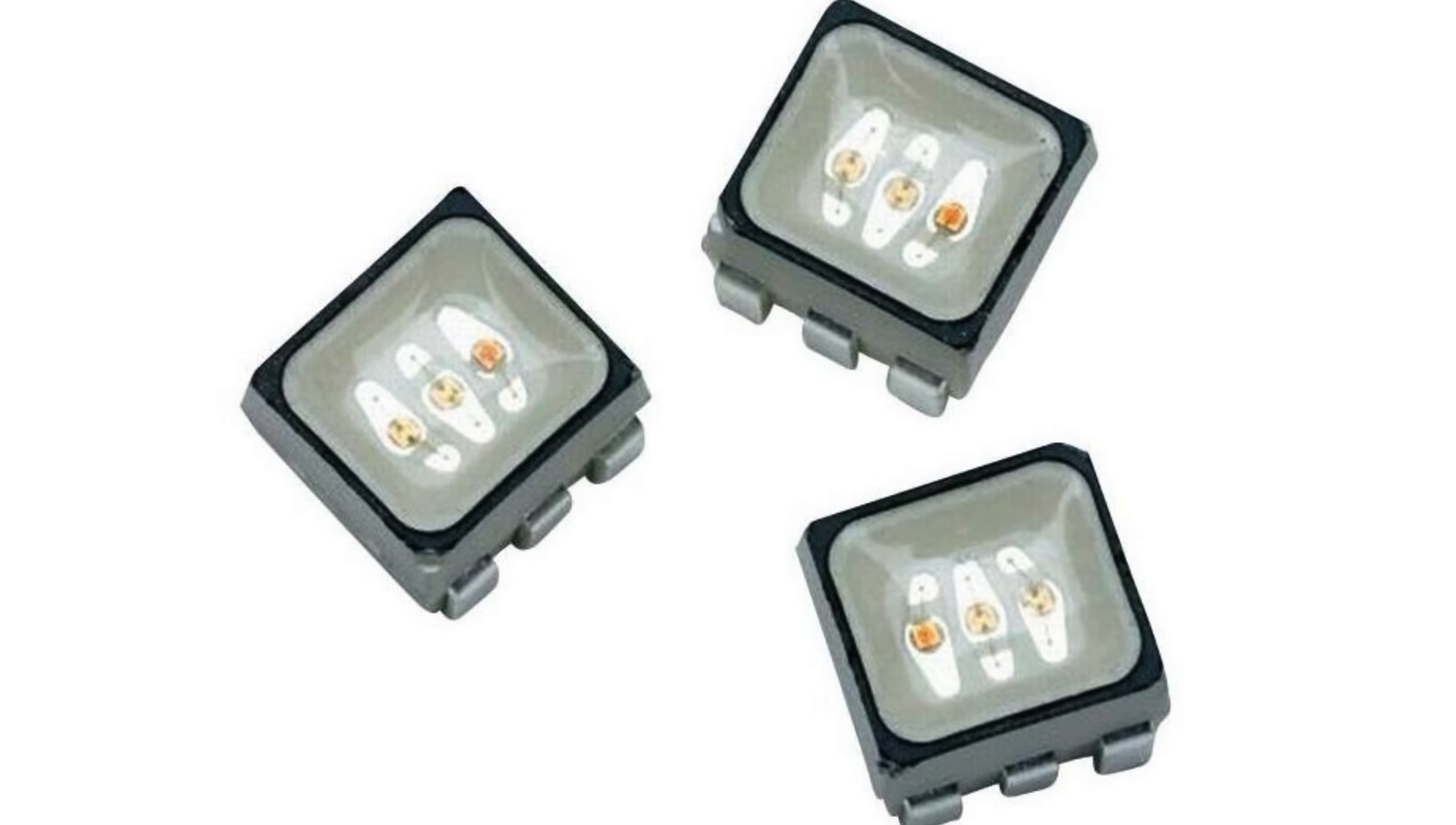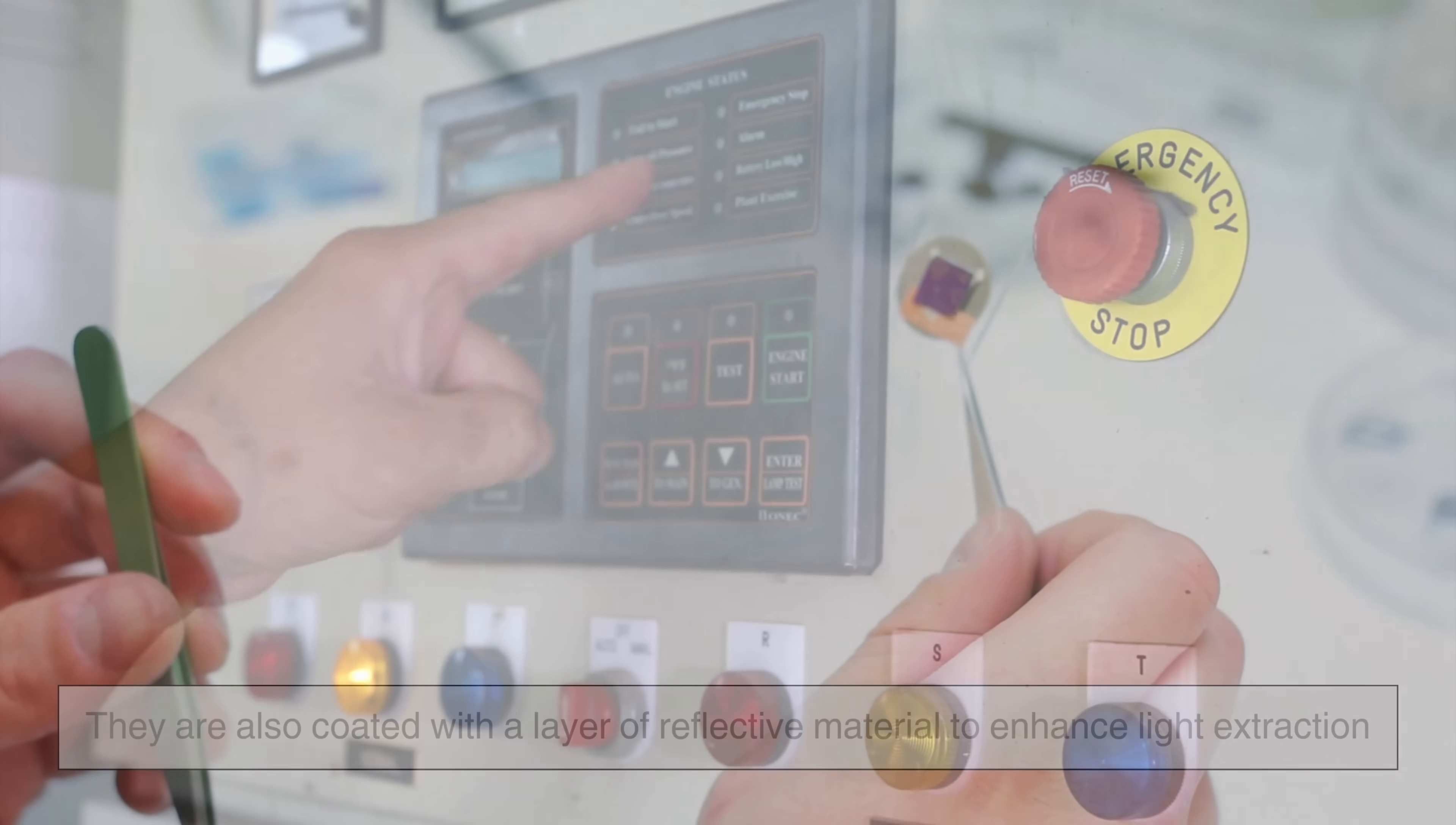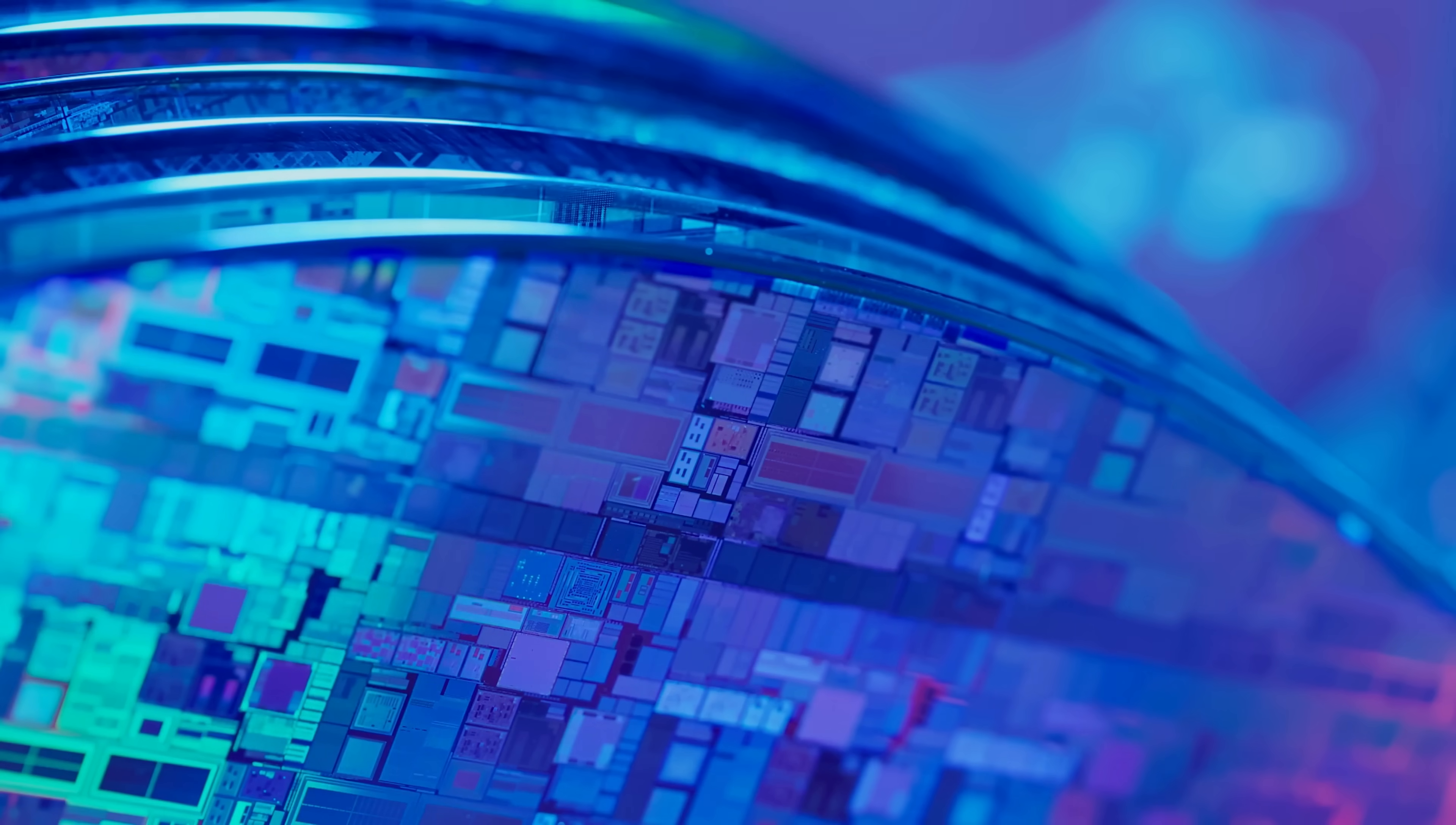After cutting, the individual LED dies undergo an etching process to shape them and optimize their electrical characteristics. They are also coated with a layer of reflective material to enhance light extraction, ensuring that more of the generated photons escape from the LED instead of being absorbed within the semiconductor.